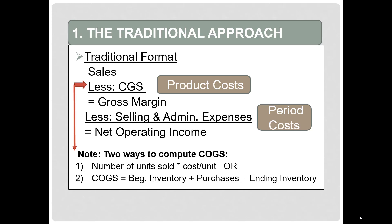It is important to remind you that cost of goods sold will be computed two ways in this course. You could take the number of units sold times the cost per unit, or use the schedule that says beginning inventory plus the inventory you purchase minus the ending inventory equals the inventory that you sold, or cost of goods sold.